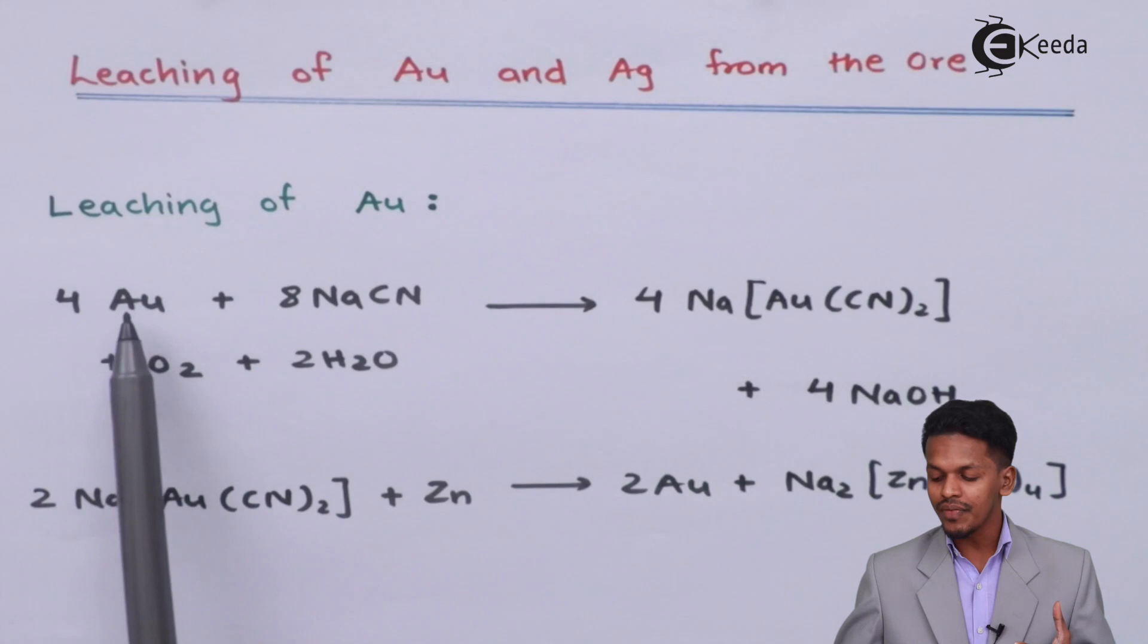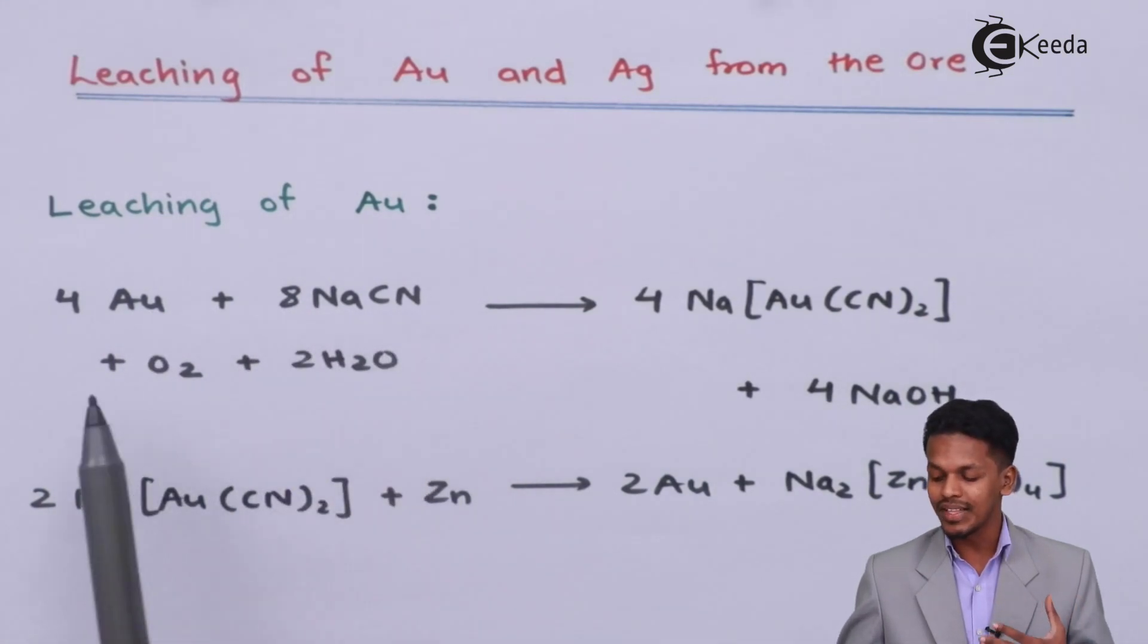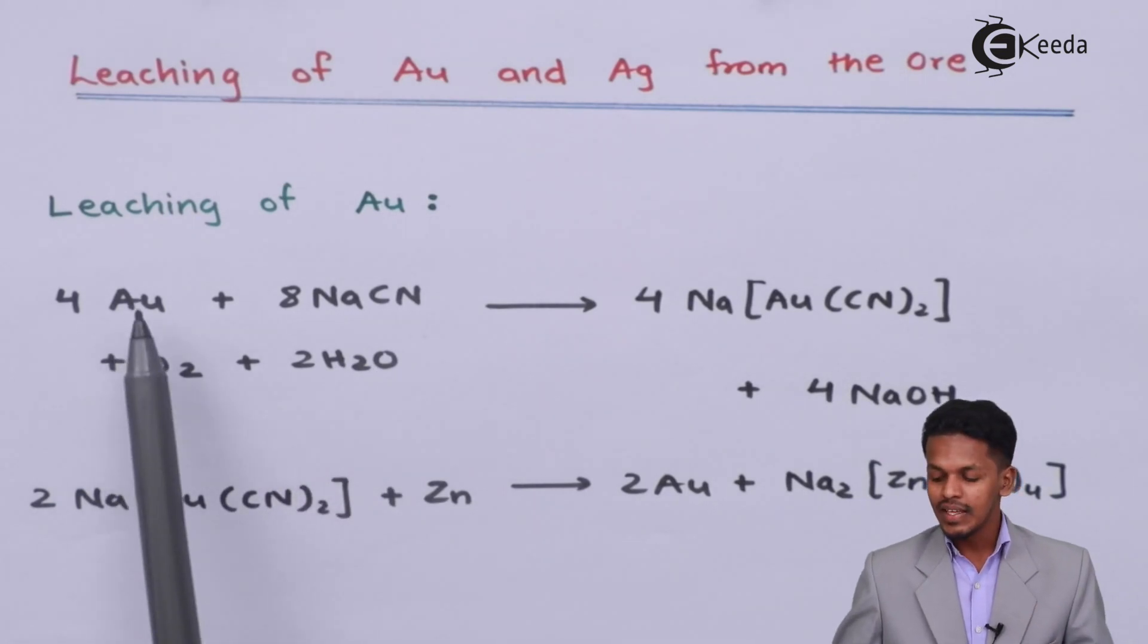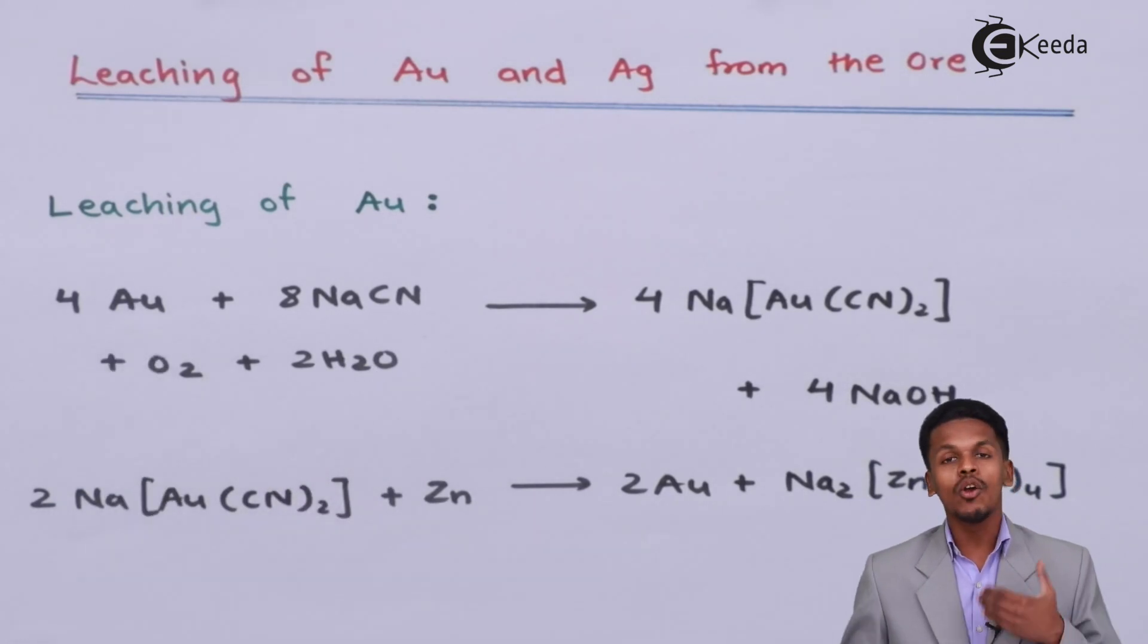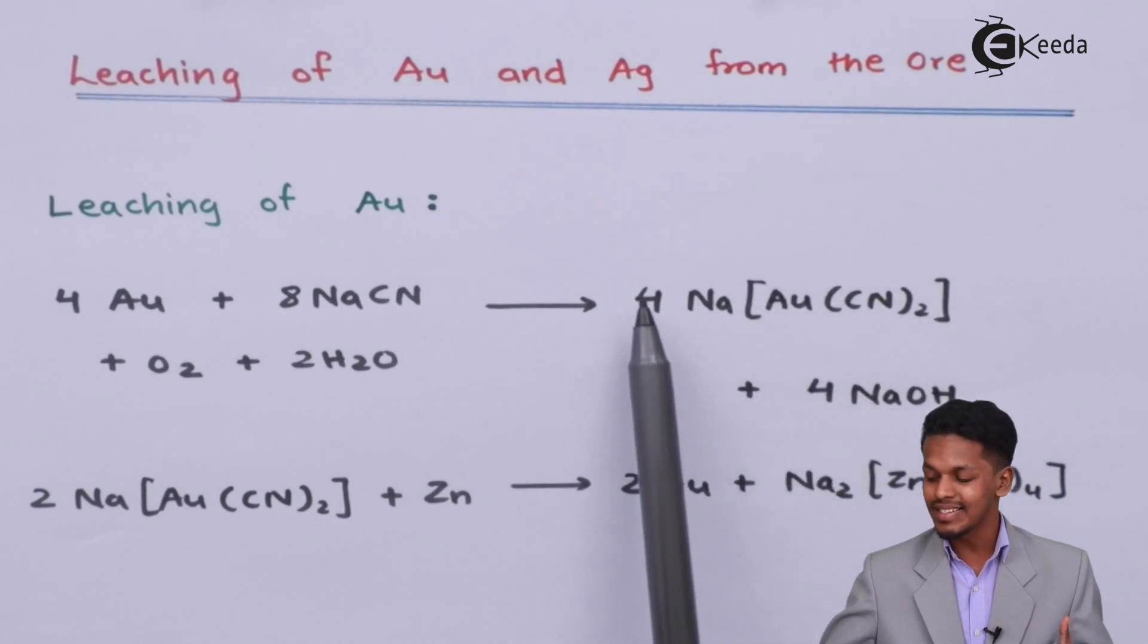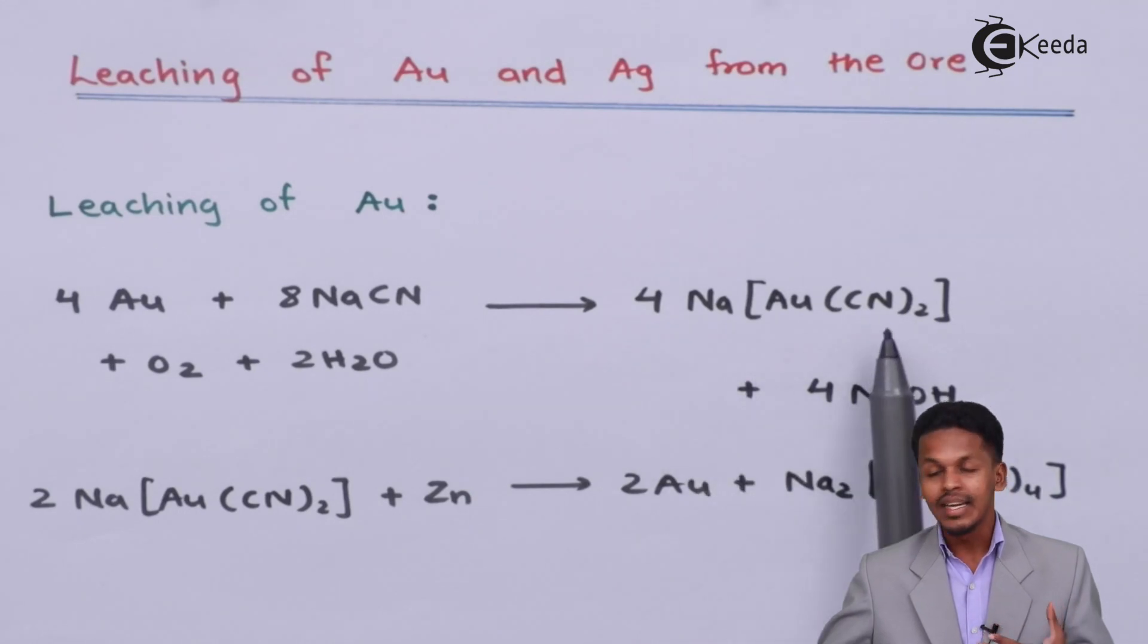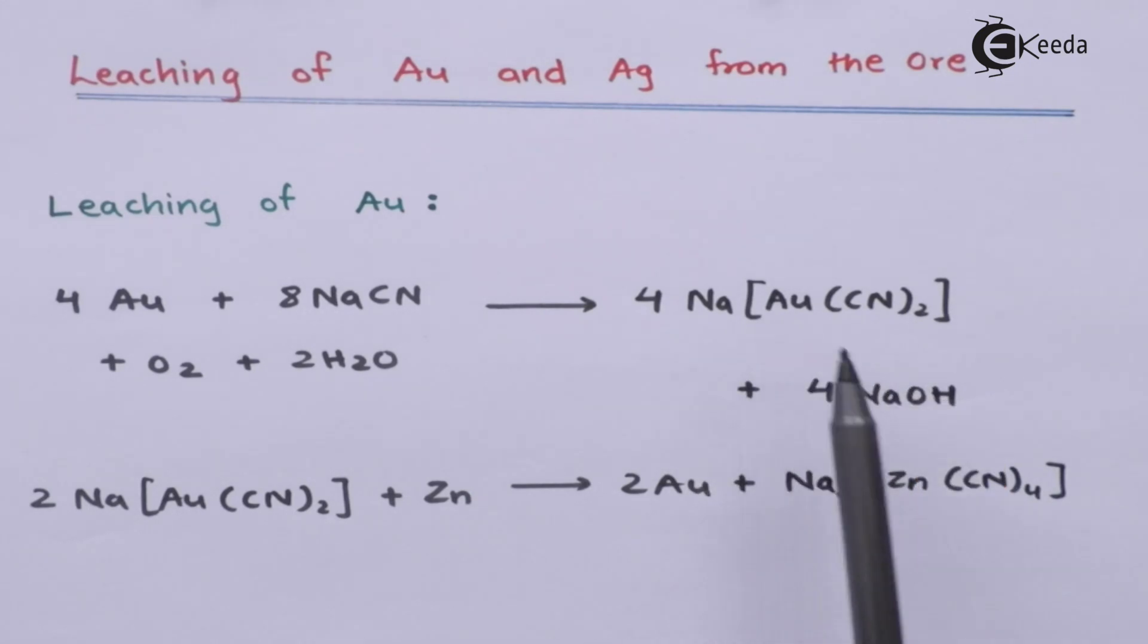Therefore, the impure gold, that is 4 moles of Au, is treated with 8 moles of NaCN (sodium cyanide) along with O2 and 2 moles of H2O. In this case, the gold is basically oxidized to Au+ and then it forms a complex because it has been treated with NaCN. This is 4 moles of sodium dicyano aurate along with the removal of 4 moles of NaOH.